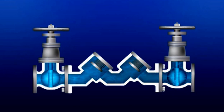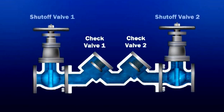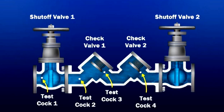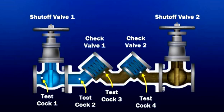The double-check valve assembly consists of two internally loaded independently operating check valves installed as an assembly between two resilient seated shut-off valves and four properly located test cocks. In normal operation, the check valves will open to allow water to pass through. In a back pressure situation, the second check should close. If it doesn't seal properly, the first check will back up the second.